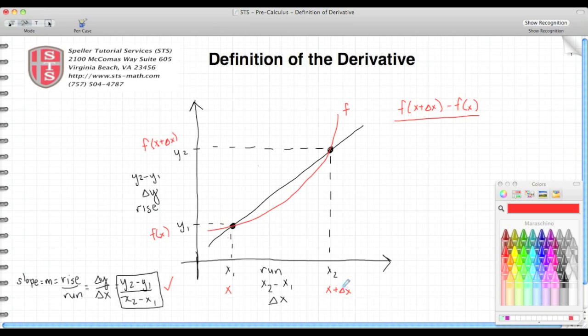x plus delta x minus x, so that gives me my run. Now I see I have a positive x and a negative x, so that means that I can cancel those out. So let me rewrite this: f of x plus delta x minus f of x, all this divided by delta x.